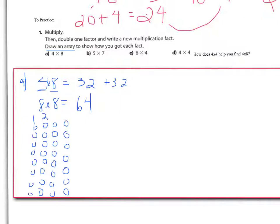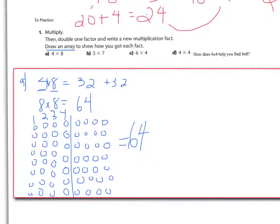So, this is an array because it has 4 groups of 8. Now, to double that, we're going to repeat that, basically. I'm going to have the exact same thing on the other side because I'm doubling it. Doubling means 2 of the exact same thing. And now, if I were to count them all out, I would see that I have 64. Press pause and try 5 times 7, then 6 times 4, and 4 times 4. Go ahead, press pause, and try those now.